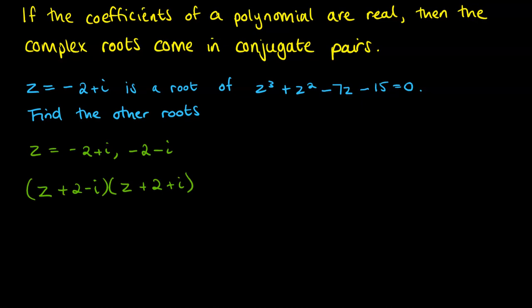Then from each of those roots, we can write down a factor of that polynomial by doing z minus the root. So here we've got z plus 2 minus i. From doing z minus this first root here. And then we've got the z minus the second root makes this one.